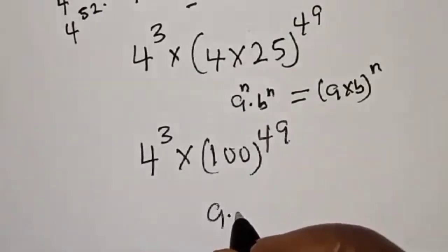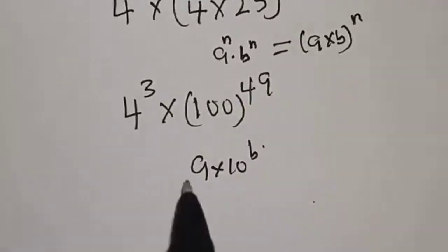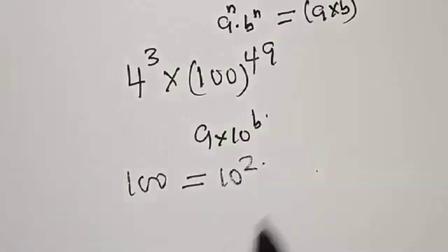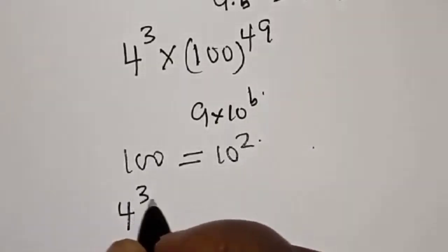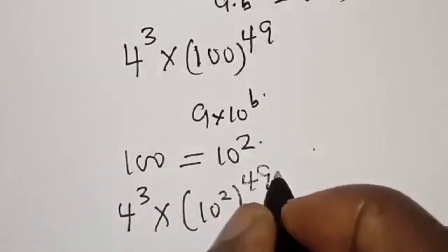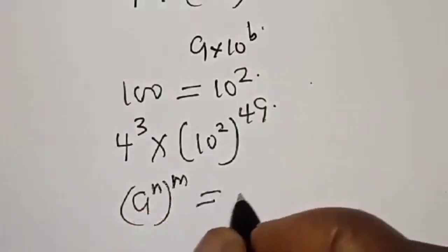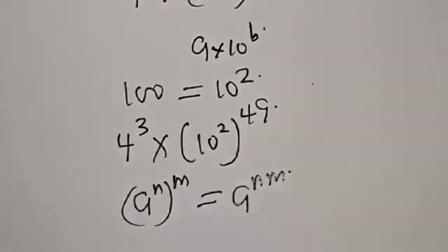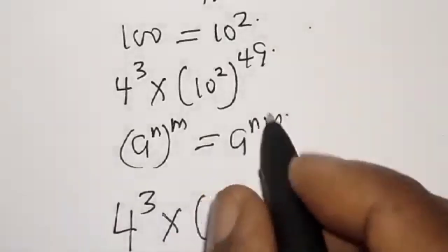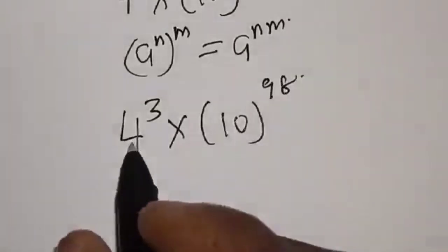Our answer is going to be in the form a times 10 raised to power b. Remember that 100 is the same as 10 squared, so we have 4 raised to power 3 multiplied by 10 squared raised to power 49. Using the rule that a raised to power n raised to power m equals a raised to power n times m, this gives 4 raised to power 3 multiplied by 10 raised to power 98.